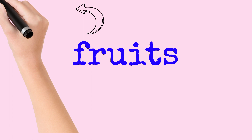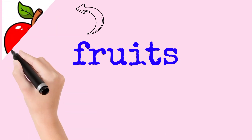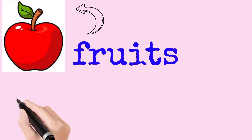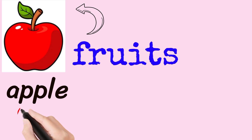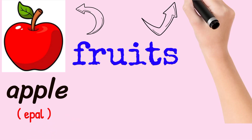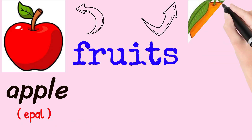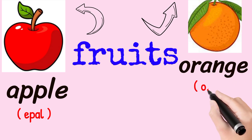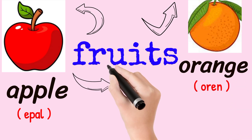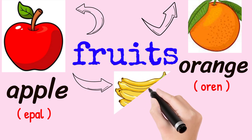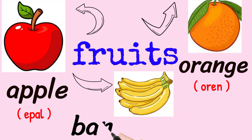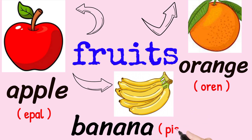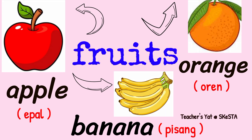Third is fruits — buah-buahan. For example, apple, orange, and banana (pisang). Eating fruits can make our skin smooth because they contain vitamins.